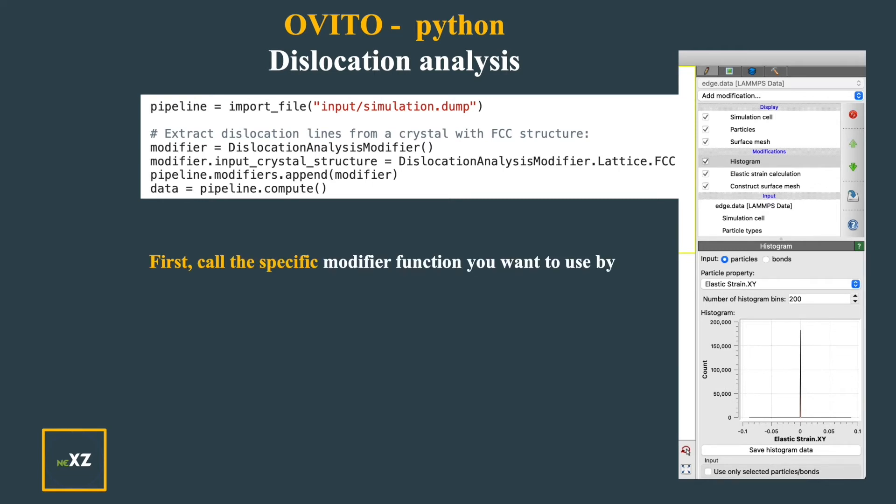I will call the modifier function you want to use by - I will use some name modifier equals to dislocation analysis modifier open brackets. So this is how you call a function in Python.